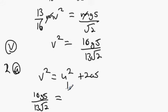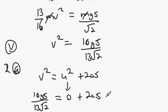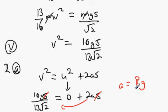So: 16GS over 13 root 2 equals U² + 2AS. U² is 0 because it starts from rest. The S cancels both sides, so A = 8G over 13 root 2. Remember the units: meters per second squared.